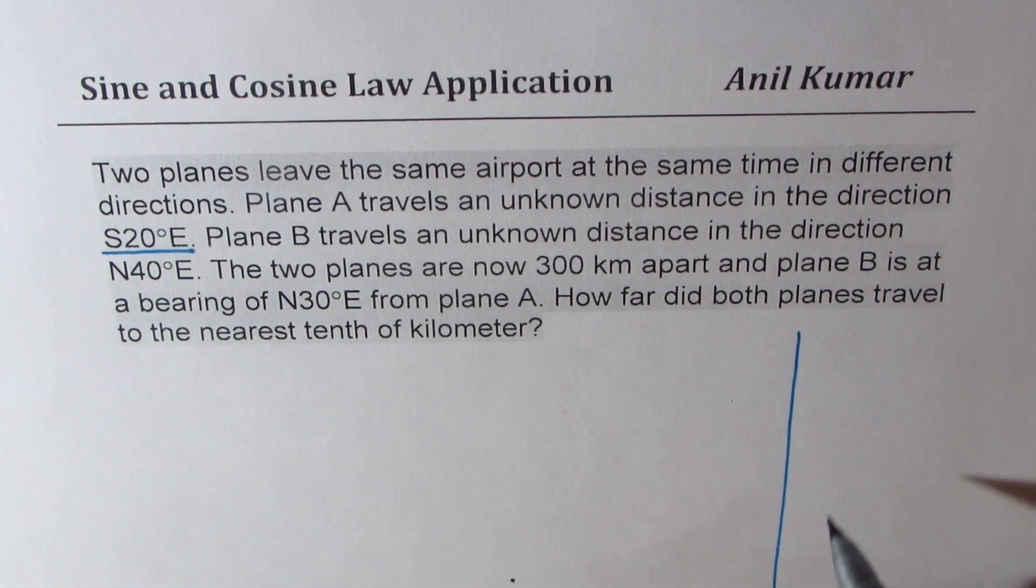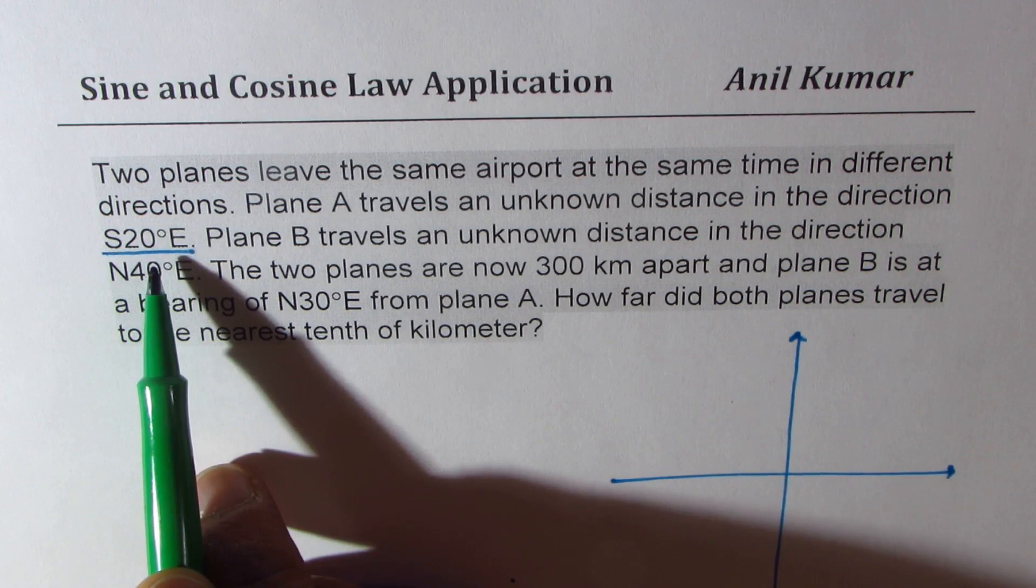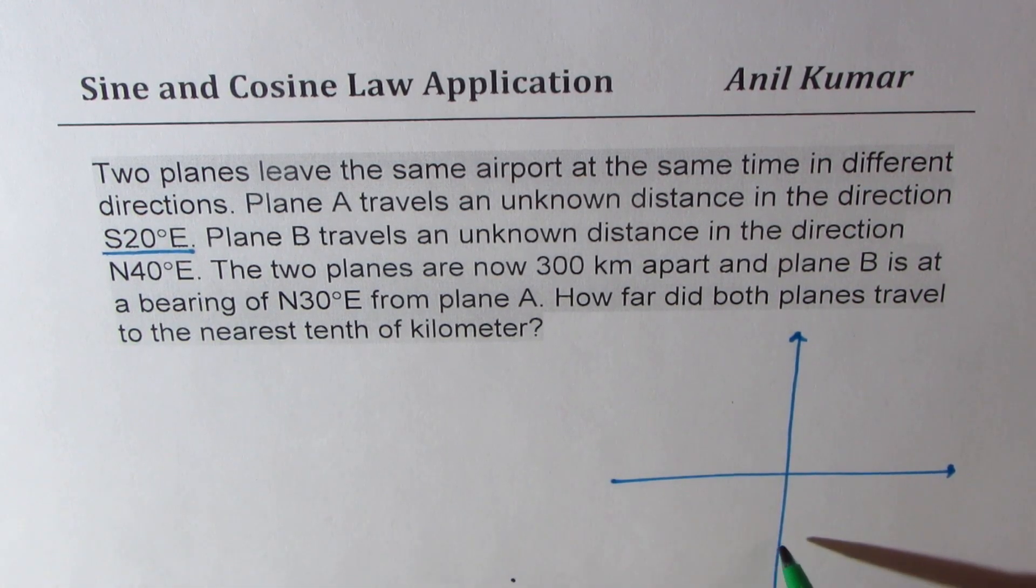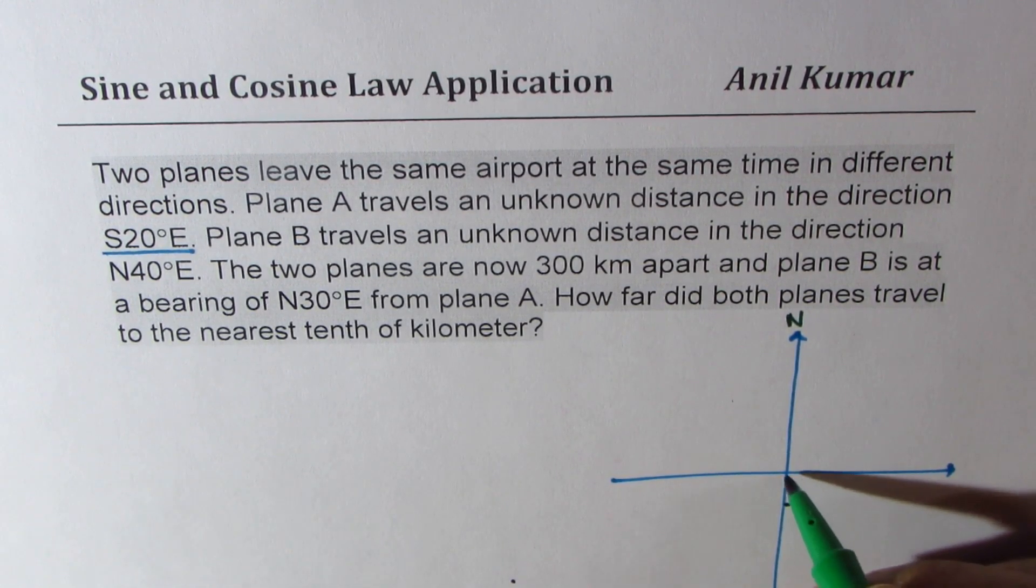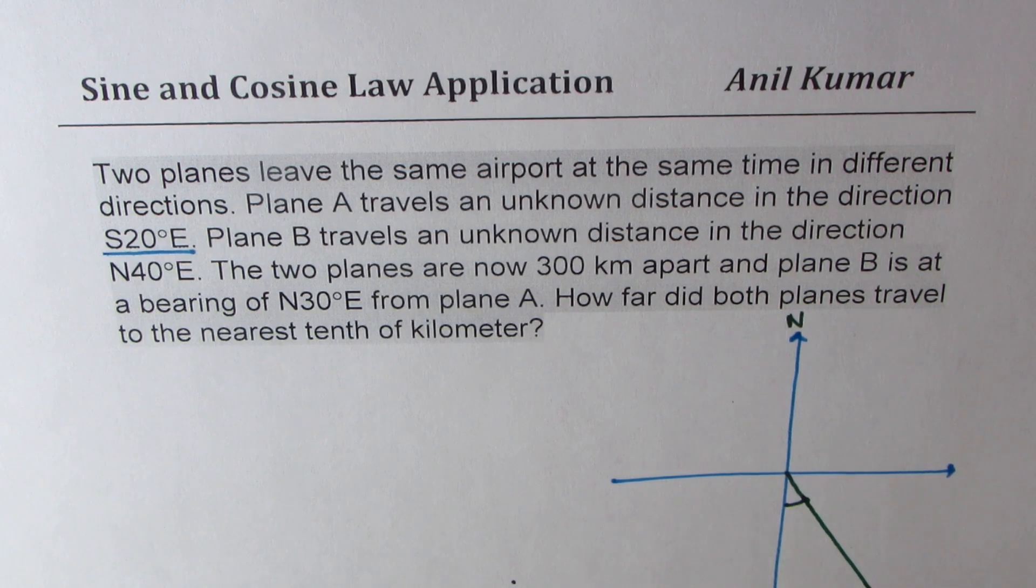So let's sketch as we read the question. The first part is that the plane leaves in the direction from south 20 degrees east. So this is south, that is north for us, 20 degrees east in that direction.